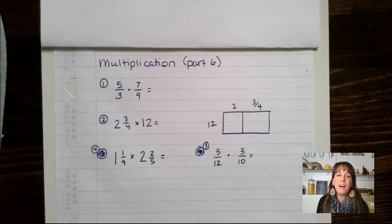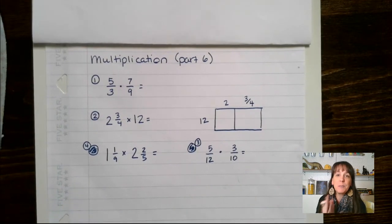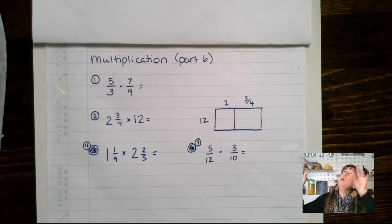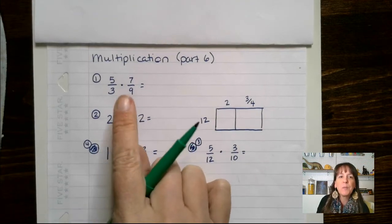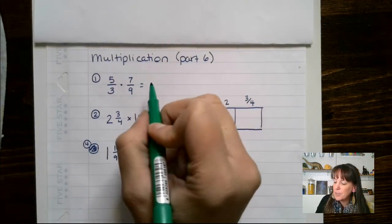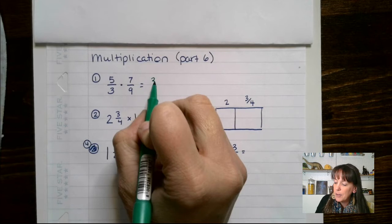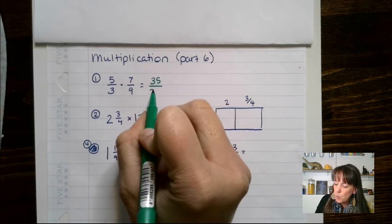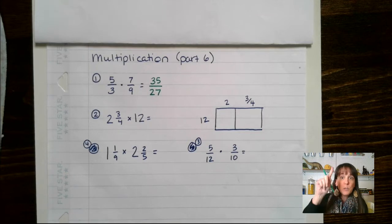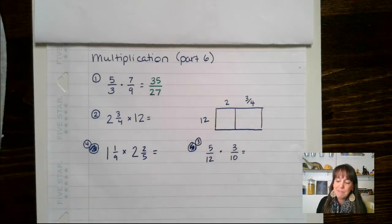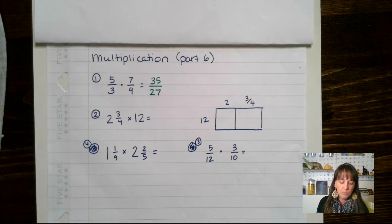Let's move on to multiplication — and here's the neat thing: you do not have to have a common denominator. Way easier! When we multiply fractions, we multiply straight across the top and straight across the bottom. The result here is 35 over 27. You always want to double-check: can I reduce that? No — we are good to go.